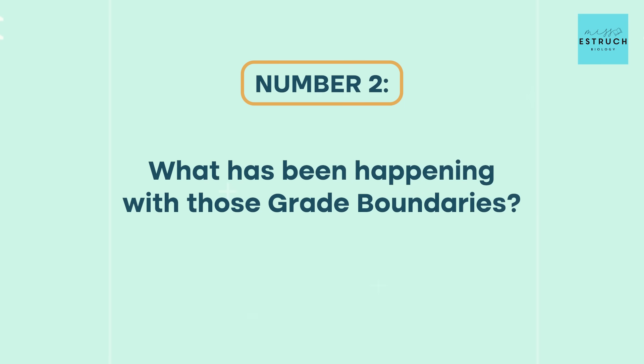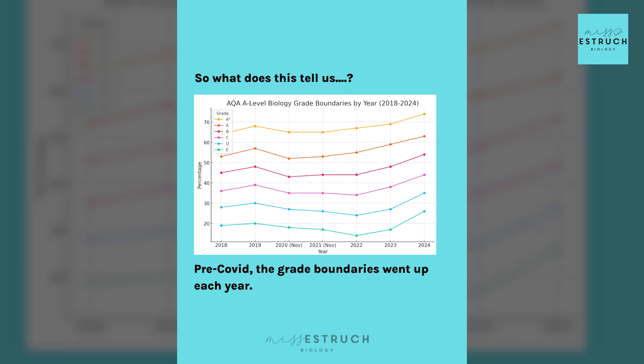Let's look at the patterns in grade boundaries. Pre-COVID, 2017 to 2019, grade boundaries increased each year as AQA tightened up and aimed for consistency. Typically, grade boundaries increase after a specification change because teachers become more familiar with what the spec demands, and there are more past papers for students to practise with. That's why boundaries rose from 2017 to 2018 to 2019 — students started performing better because of those reasons.